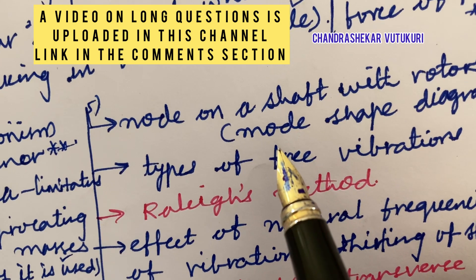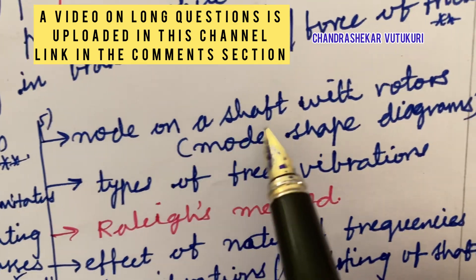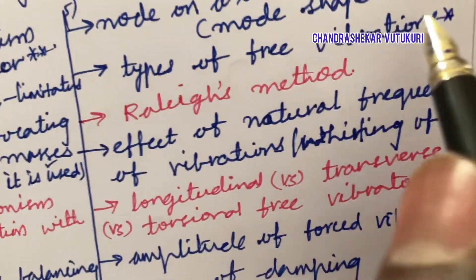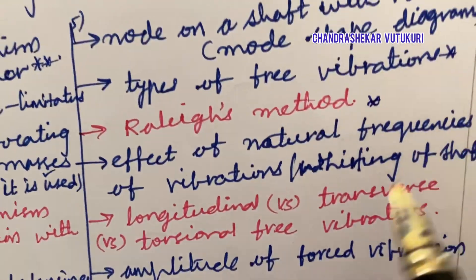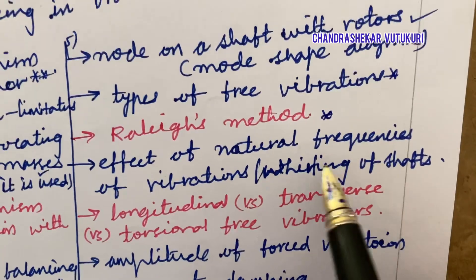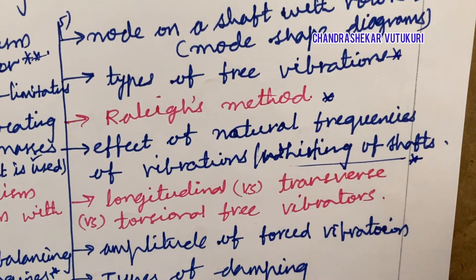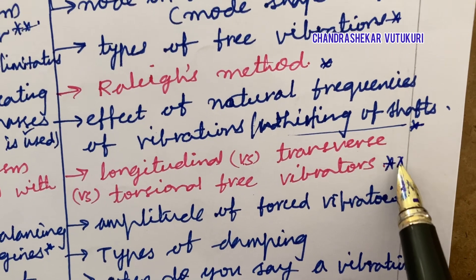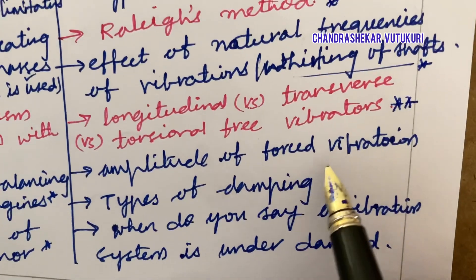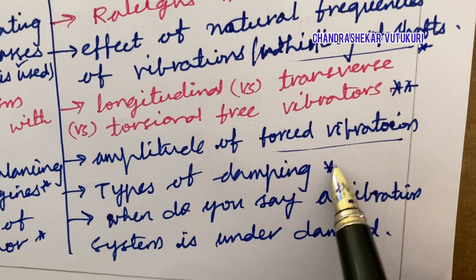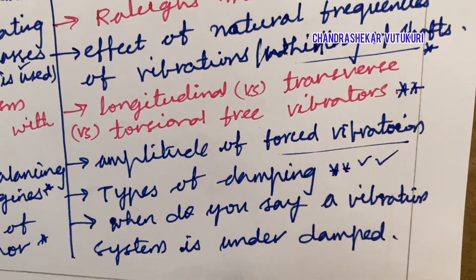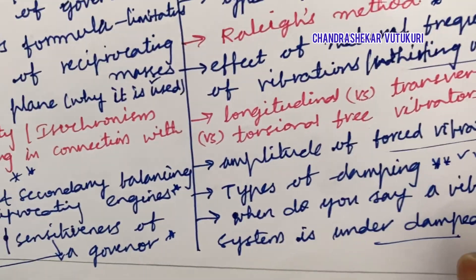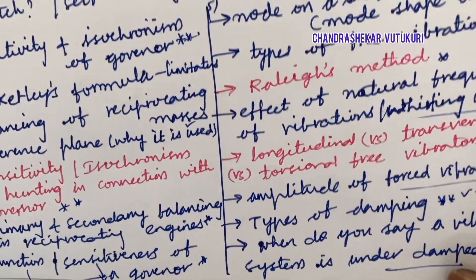Note on a shaft with rotors and mode shape diagrams, types of free vibrations, Rayleigh's method, effect on natural frequencies of vibrations, and whirling of shafts — define the term — may be short questions. Longitudinal versus transverse versus torsional free vibrations is a top-most question. Amplitude of forced vibration and types of damping are important, and 'when do you say a vibration system is under-damped' is a general question that may be asked.